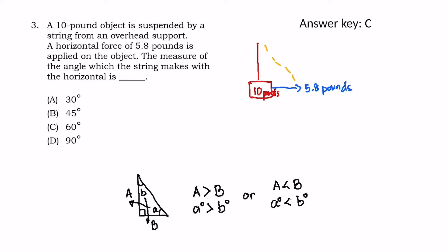A 10-pound object is suspended by a string from an overhead support. A horizontal force of 5.8 pounds is applied on the object. The measure of the angle which the string makes with the horizontal is...